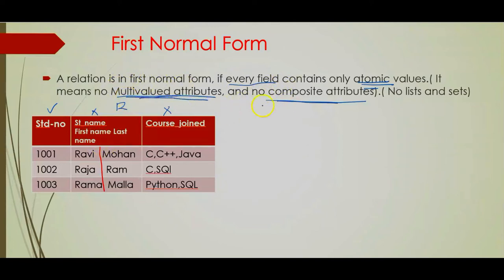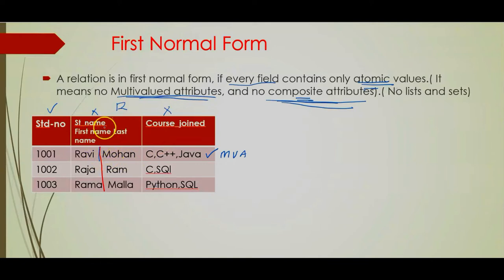A relation should not contain multi-valued attributes or composite attributes. A multi-valued attribute is an attribute which contains more than one value. A composite attribute is one that can be divided into sub-parts — for example, student name can be divided into first name and last name. The database should not contain this kind of format; if it does, that relation is not in First Normal Form.